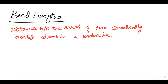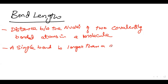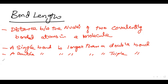What was the difficulty in that? The key points about bond length: a single bond is longer than a double bond, and a double bond is longer than a triple bond. Also, the larger the atom, the longer the bond.